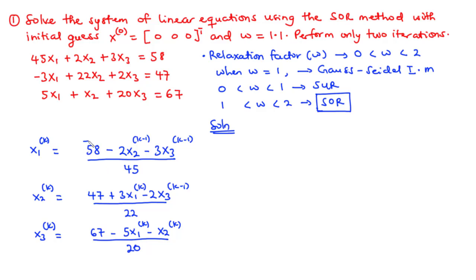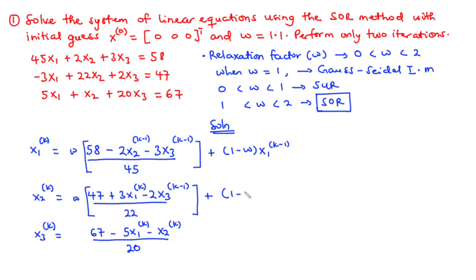Next, we attach the relaxation factor. For x1(k), we multiply the fraction by omega and add (1 - omega) * x1(k-1). Similarly, for x2(k), we multiply by omega and add (1 - omega) * x2(k-1). And for x3(k), we multiply by omega and add (1 - omega) * x3(k-1). This is what we use for the iteration steps.